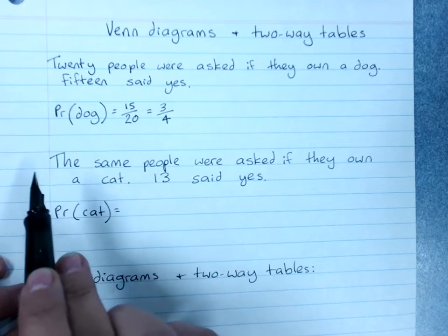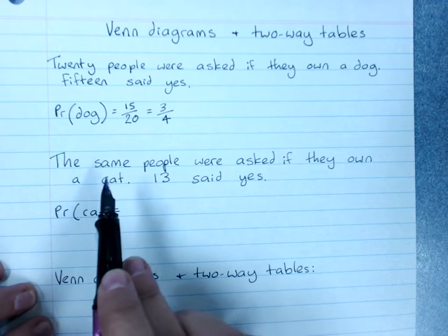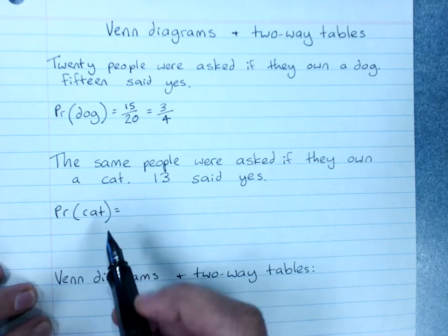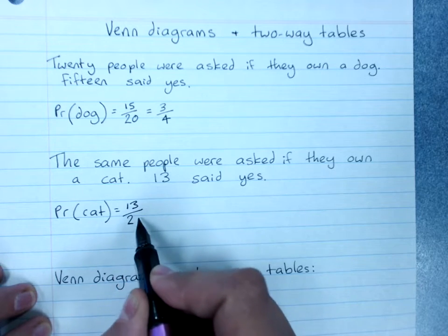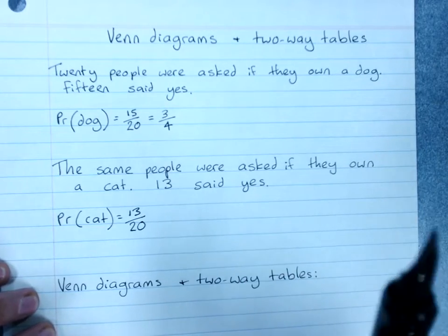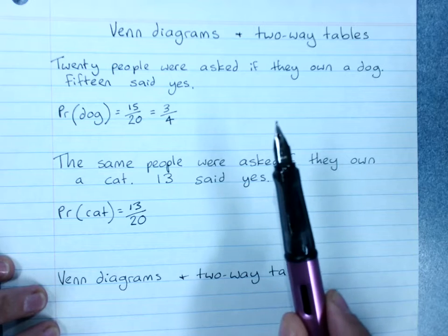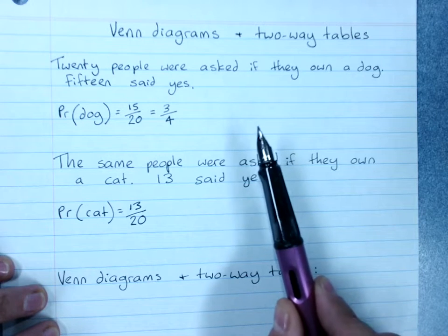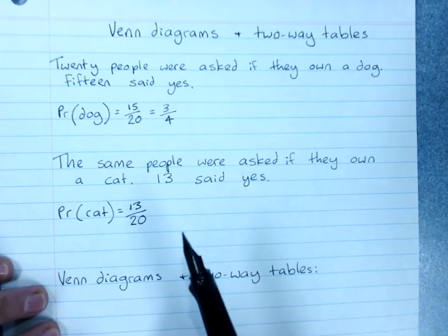Then we asked the same people if they own a cat. 13 of them said yes. So the probability that anyone randomly chosen in the group owns a cat is 13 out of 20. Now Venn diagrams and two-way tables are two ways of helping us solve problems to do with probability and numbers when two different questions are asked.